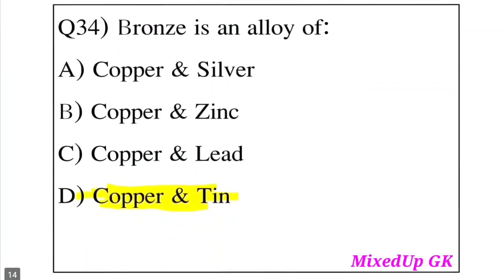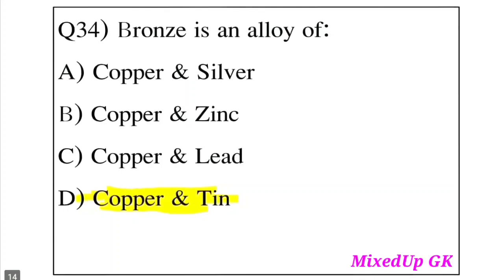Question 34: Bronze is an alloy of which metals? Options are: Copper and silver, Copper and zinc, Copper and lead, or Copper and tin. The answer is Copper and tin. Bronze is an alloy of copper and tin.